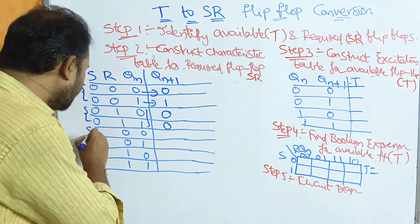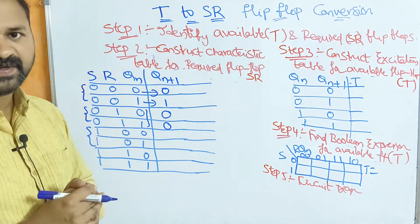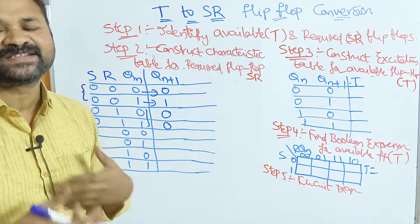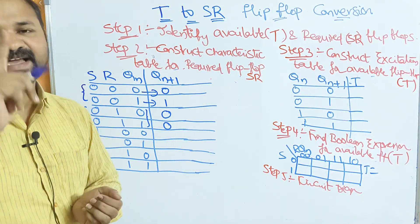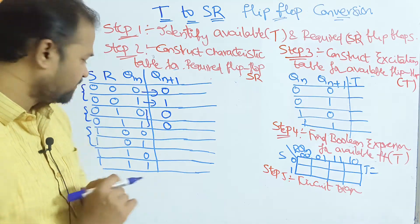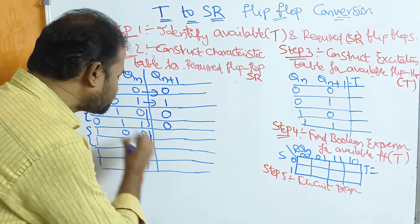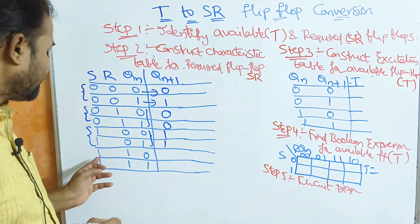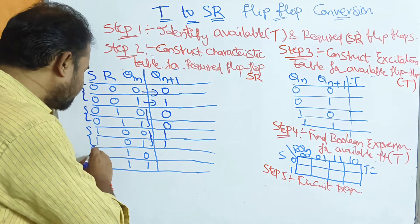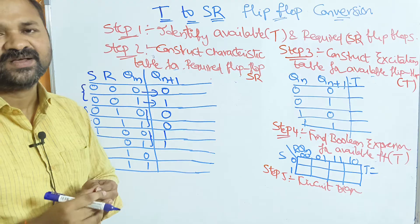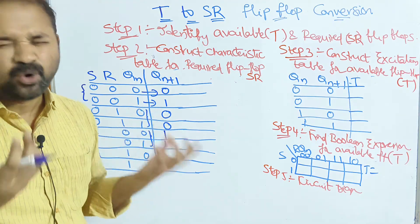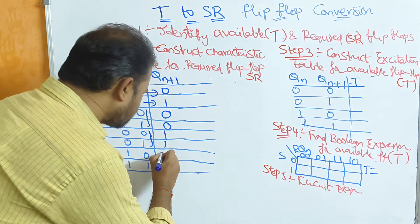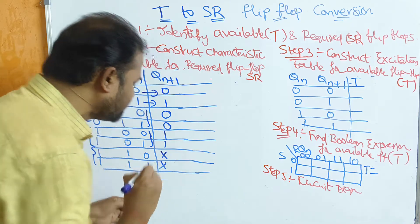In the next 2 cases, SR values are 1 0. Here S=1, which means set. Set means the output is 1. So irrespective of the current state output, the next state output is always 1. For the last 2 cases, SR values are 1 1. We don't know what the output is, so the output is don't care.